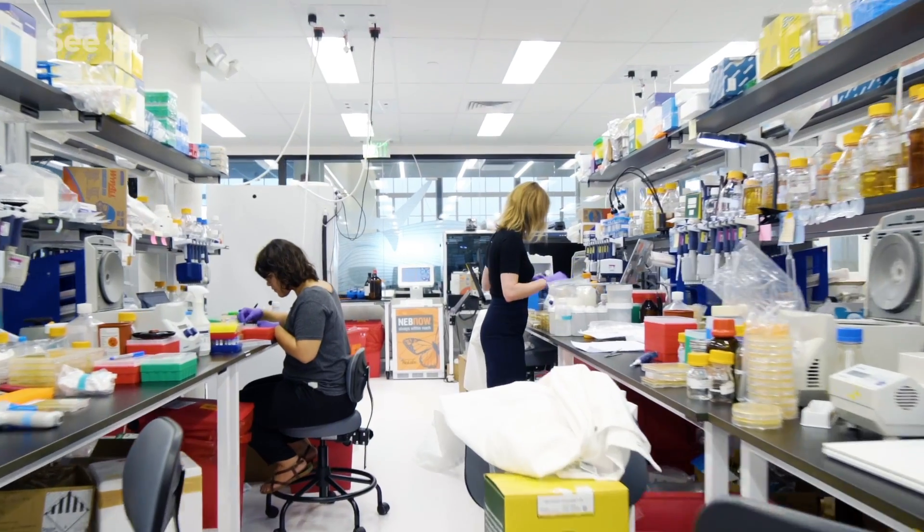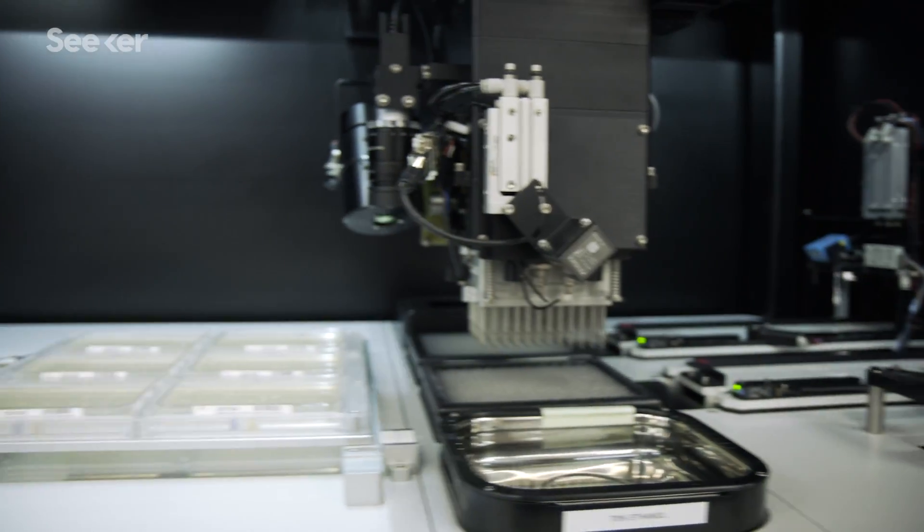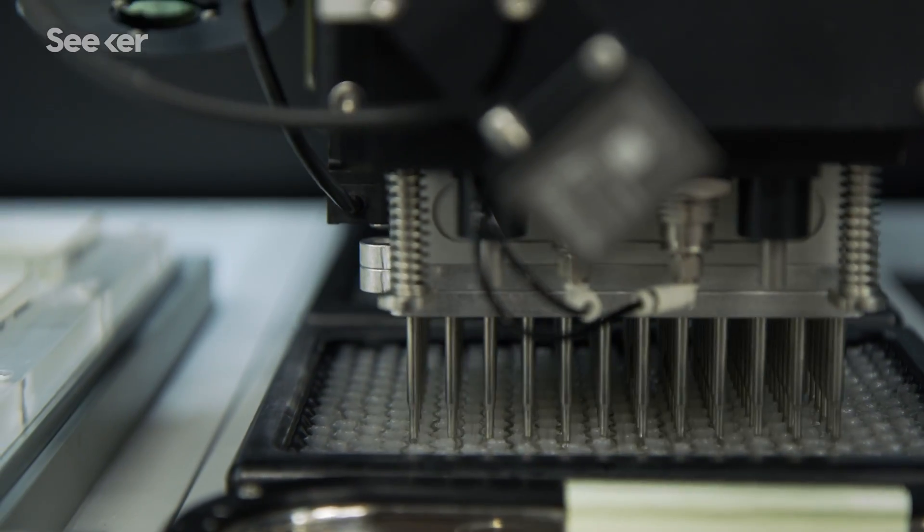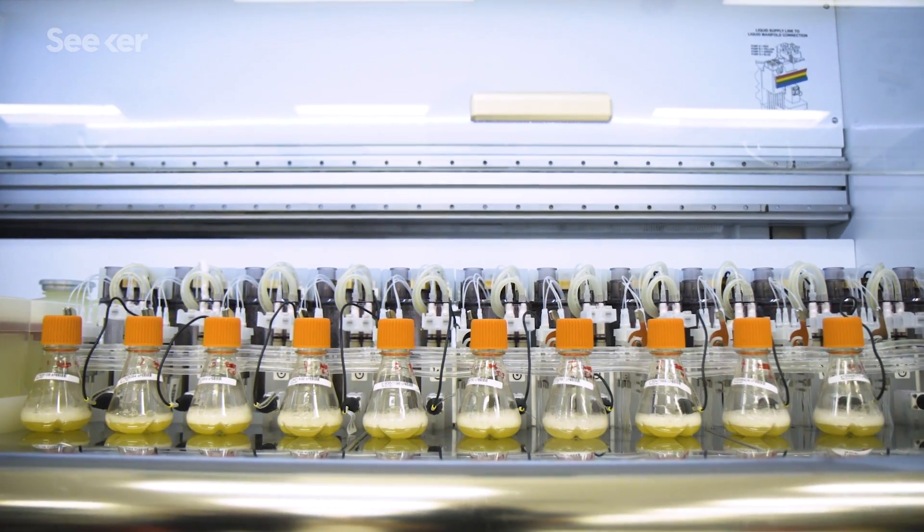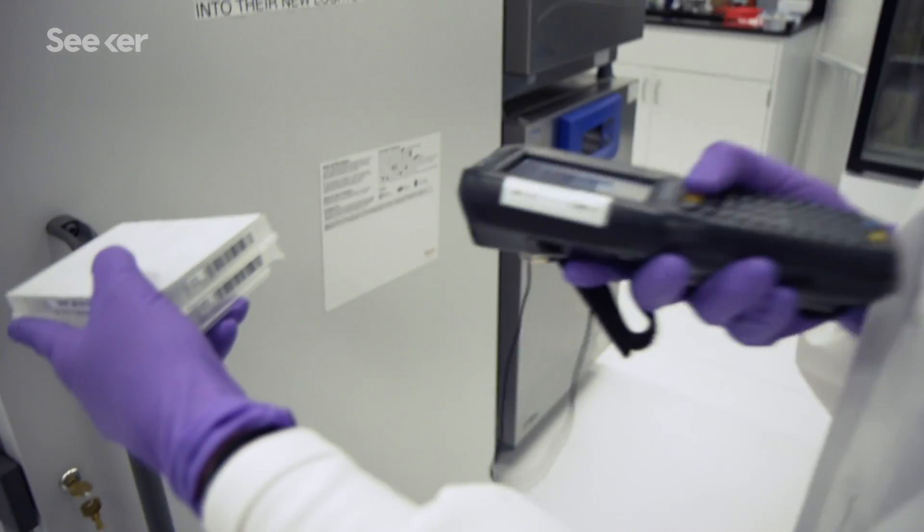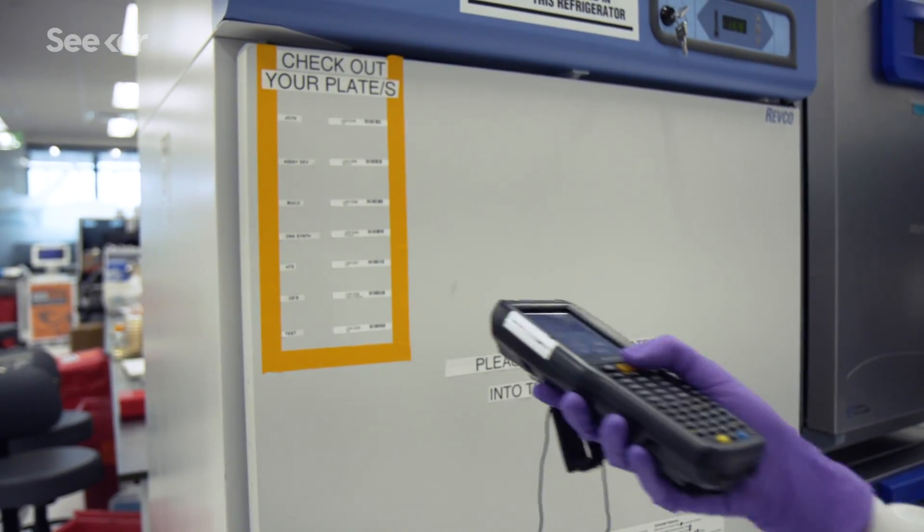They're taking synthetic DNA, remixing it, and programming microorganisms, turning these living samples into tiny factories that could one day pump out new foods, fuels, and medicines. Every piece of DNA here is barcoded and catalogued in what's considered the world's largest genetically engineered strain bank.